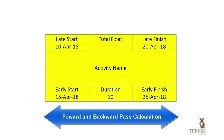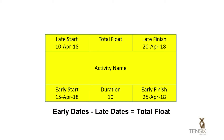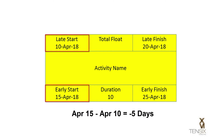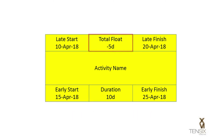During a forward and backward critical path calculation, the early dates are subtracted from the late dates to calculate float. In this example, the early date of April 15th has been subtracted from the late date of April 10th, leaving negative 5 days of total float.